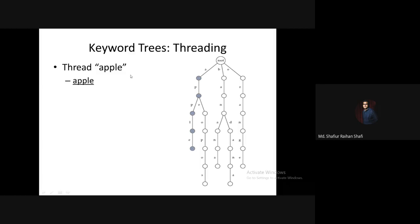So we can say that this is how threading is done in terms of the keyword tree. I hope you have understood this demonstration and example. This is about thread searching in the keyword tree. If you have any sort of query, please post it in the comment section.